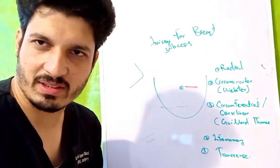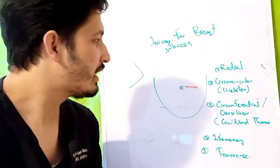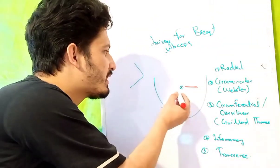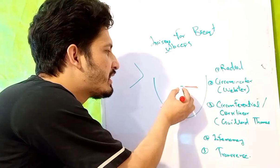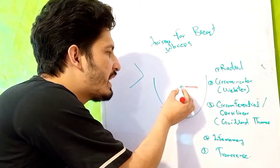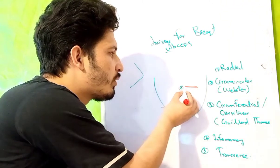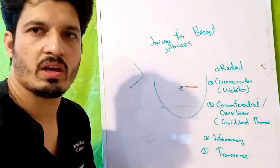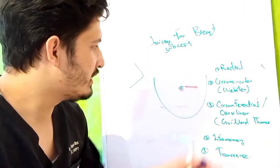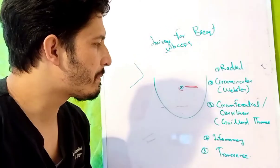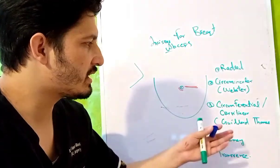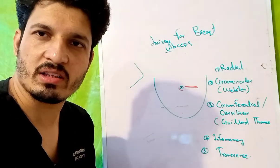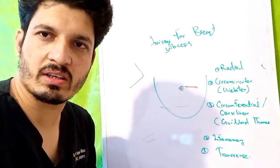Then you have the circumareolar incision, also known as the Webster incision. It is curvilinear and will be at the edge of the nipple-areola complex.